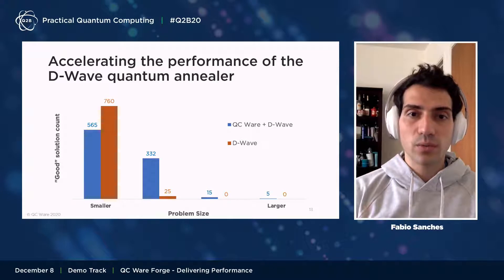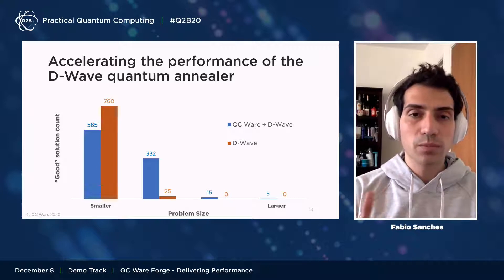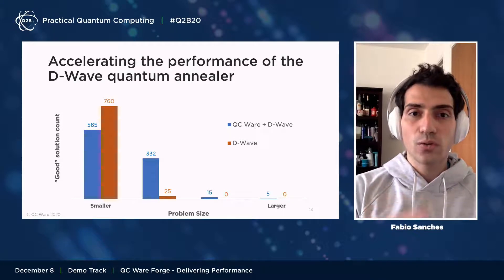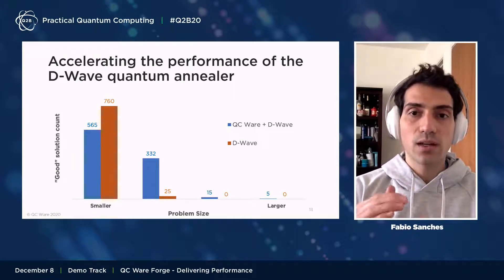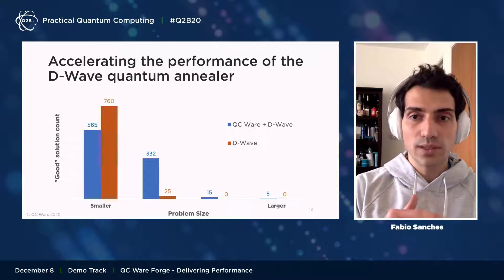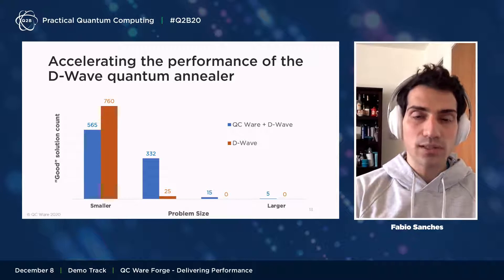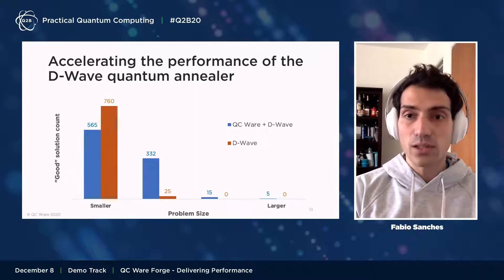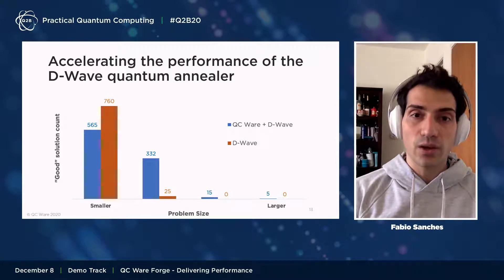Here's an example of what that means. We're plotting the total count of good solutions for a specific optimization problem — more good solutions is a good thing — comparing the same number of runs side by side. One bar shows D-Wave with standard parameters; the other shows quantum annealing on D-Wave augmented using QCWare's anneal offsets algorithm. For smaller, easier problems our algorithm slightly underperforms, but as the problem scales and becomes harder, the anneal offsets algorithm delivers a much higher count of good solutions.